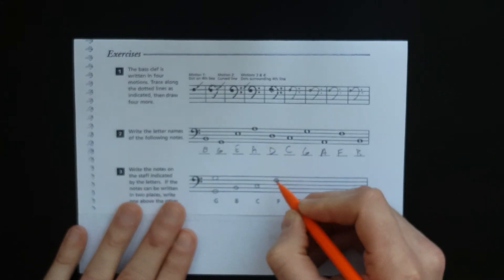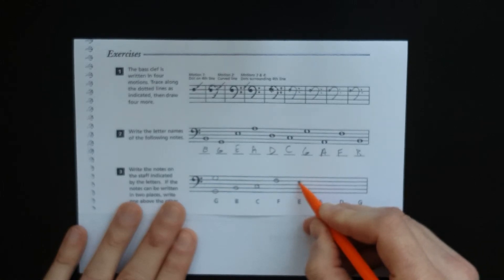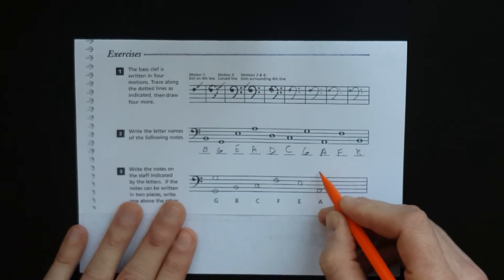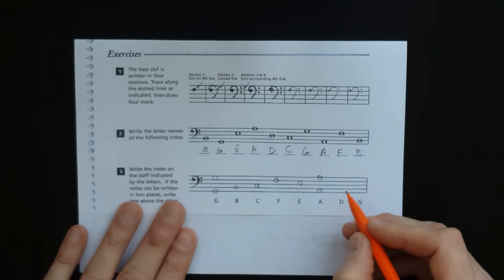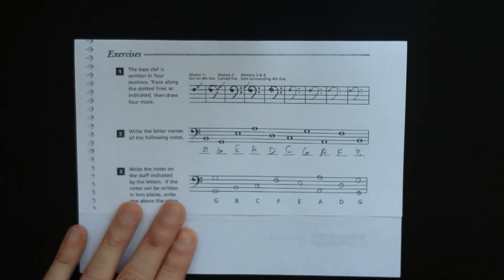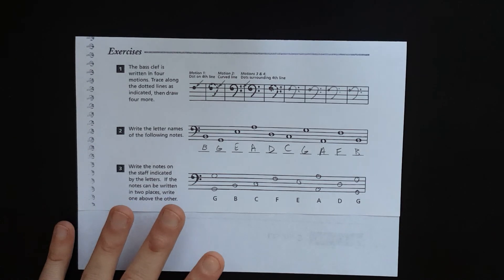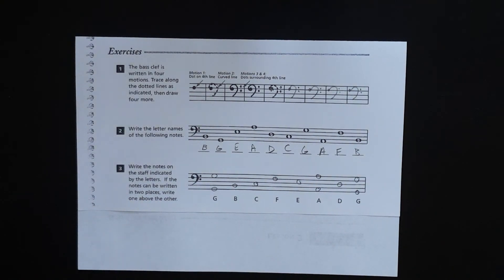All Cows Eat, also Grandma Buys Dresses For All. You've got that A in two different spaces. D is right there, and G is also in two spaces—Grandma and also Grass up there for the space. There you have it for Alfred's Essentials of Music Theory, Unit One, Lesson Three.